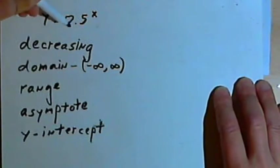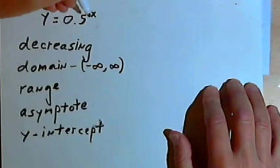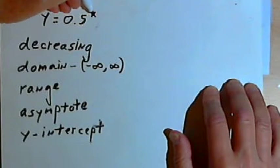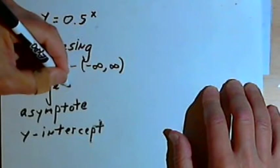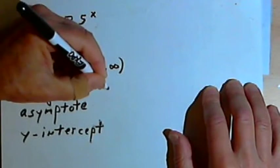Now, no matter what number we use for the x value, 0.5 raised to that number is always going to be something positive. We can never make 0.5 to the x equal a negative number or 0. So the range is going to be from 0 to infinity.